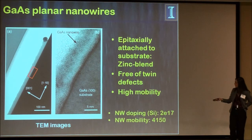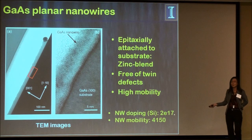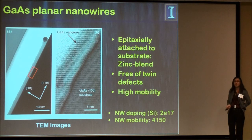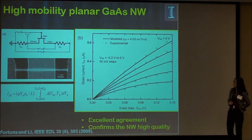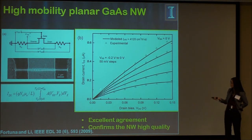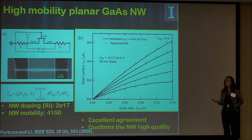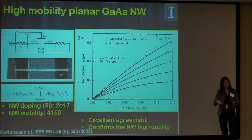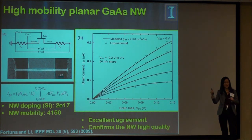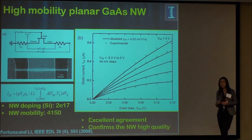We verified the mobility for intentionally silicon-doped nanowires at a doping concentration of 2×10¹⁷ per cm³. We measured a mobility of 4100 cm²/Vs, extracted from a gated device. To reach this mobility without gold using conventional epitaxial growth requires temperatures of 700–800°C. What we're doing here is low-temperature growth around 460°C, and the epitaxial growth comes out of a gold particle — a very different growth scheme — yet we achieve the same mobility.